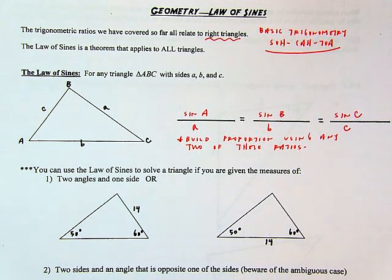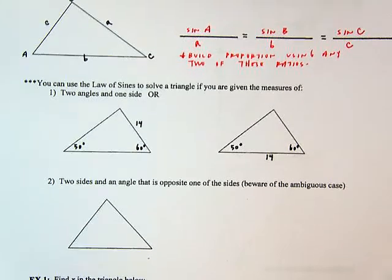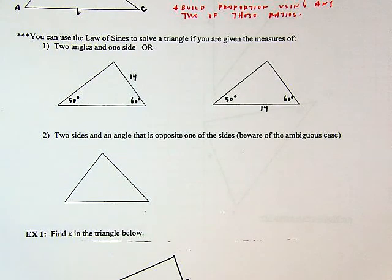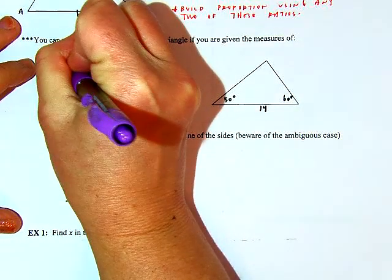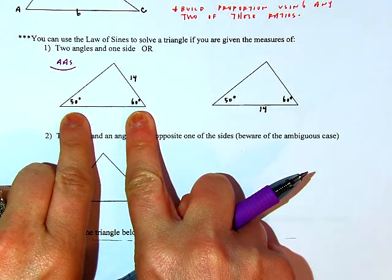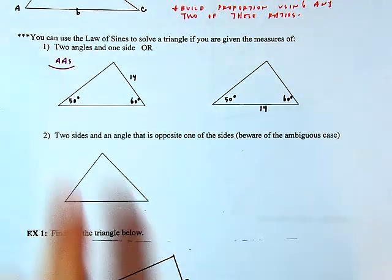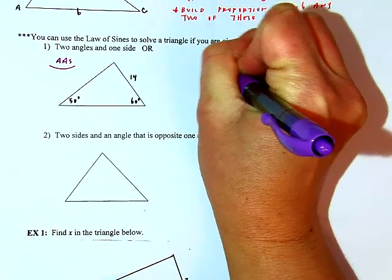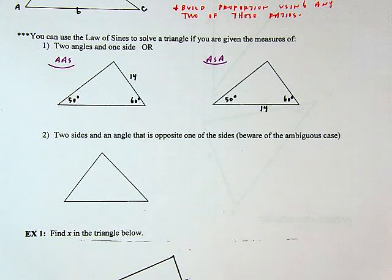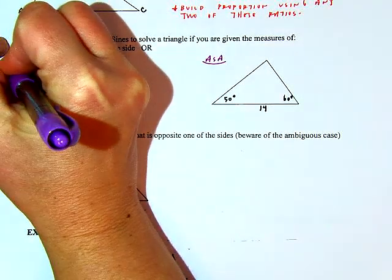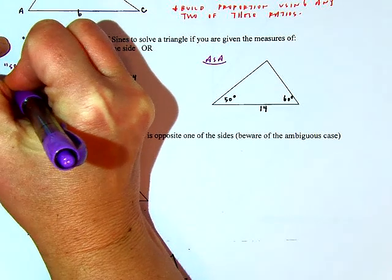When is it appropriate to use the law of sines? There are two cases. You can use it to solve a triangle — meaning find all missing angles and sides — if you're given two angles and one side. This could be angle-angle-side (AAS), where we have two angles and the non-included side, or angle-side-angle (ASA), where we have two angles and the included side. In both cases, we solve for a missing side.